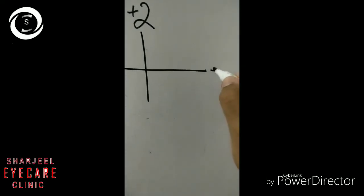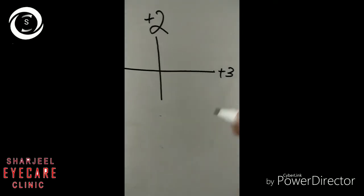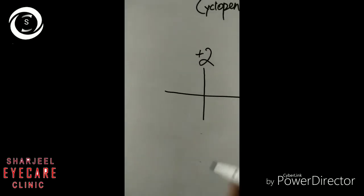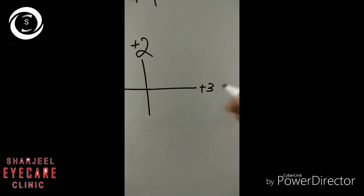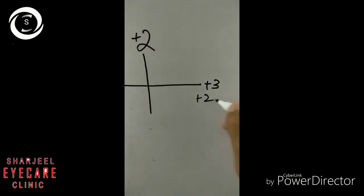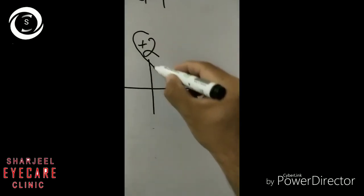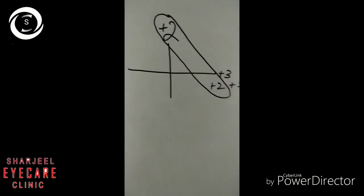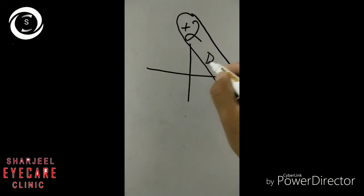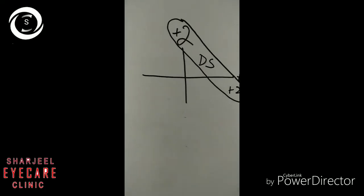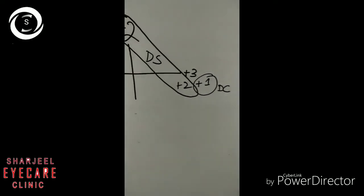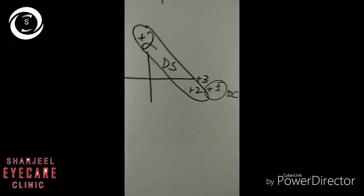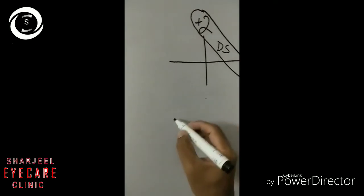Now the first example. Suppose you have neutralized the vertical meridian with plus 2 lens and horizontal with plus 3. You can see that plus 2 is present vertically as well as horizontally, so we can take plus 2 as the spherical component, because sphere is the power of a lens that acts equally on all meridians. So we have got plus 2 diopter sphere.